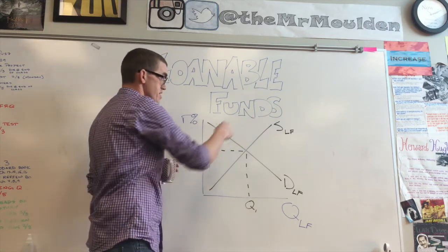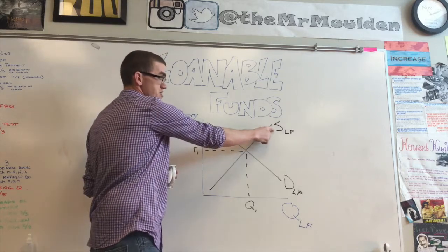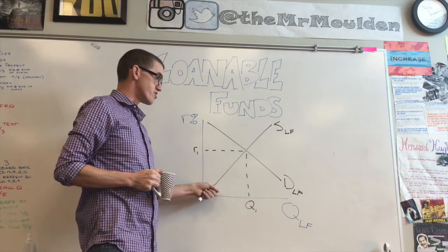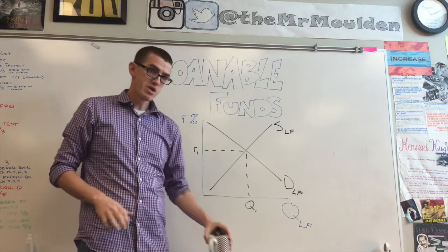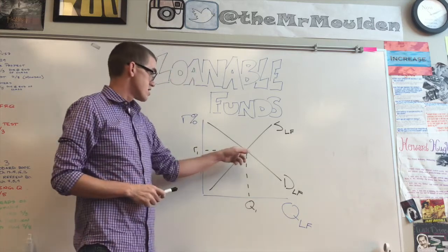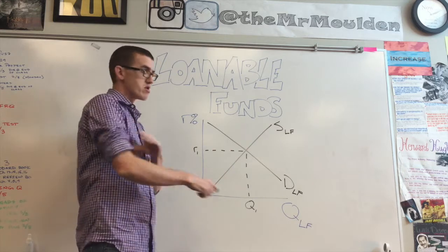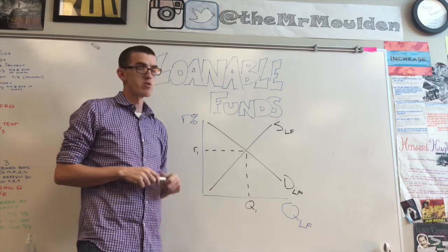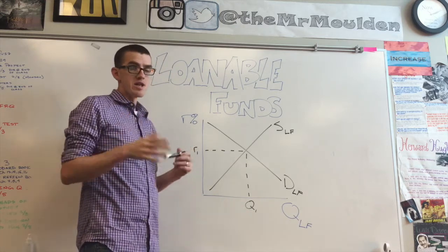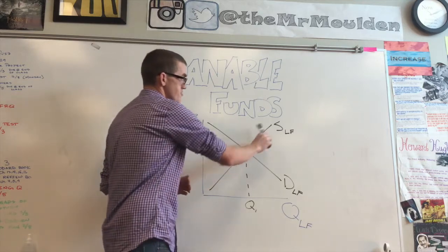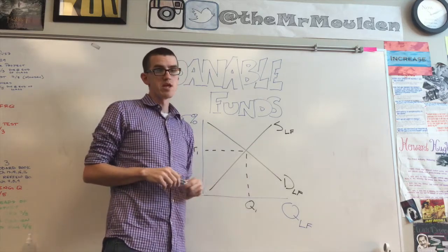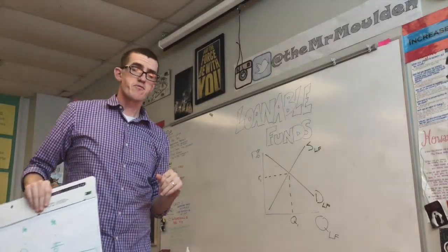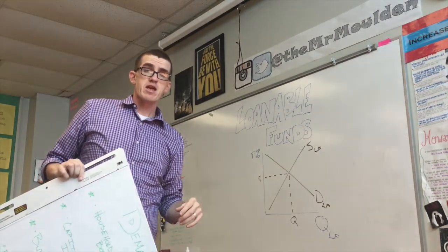Supply slopes upward because savers prefer high interest rates — we'll put more money in the bank when rates are higher since we get a greater return. Just like in any supply and demand market, there is an equilibrium point where supply and demand are equal, giving us an equilibrium real interest rate and an equilibrium quantity of loanable funds. These curves can shift right for an increase or left for a decrease.